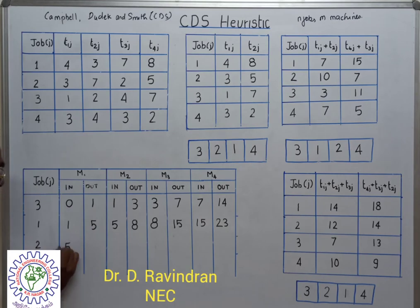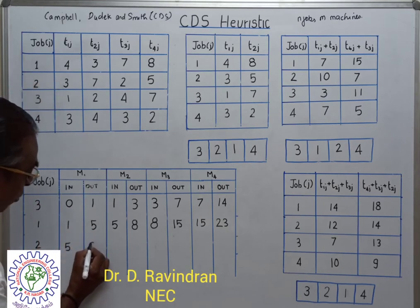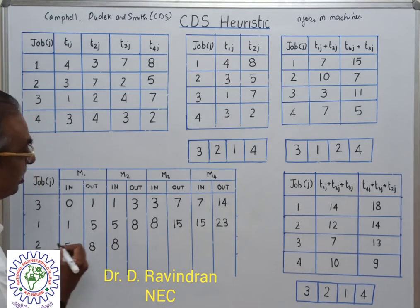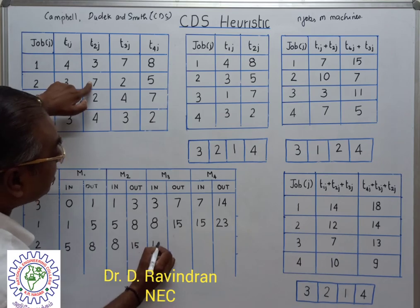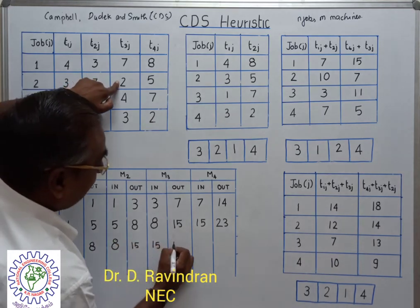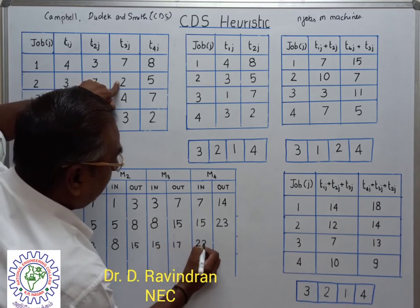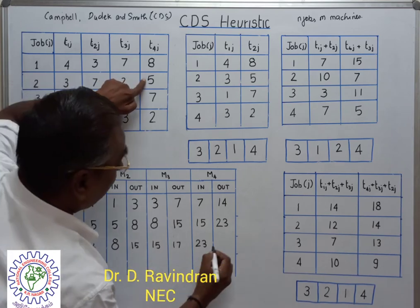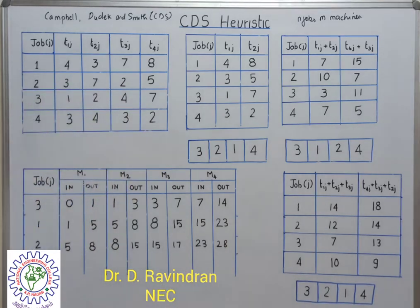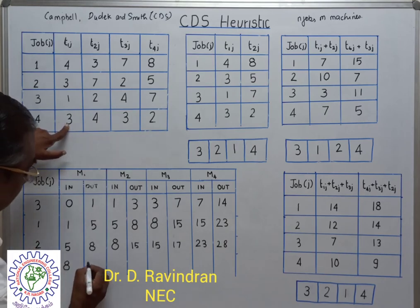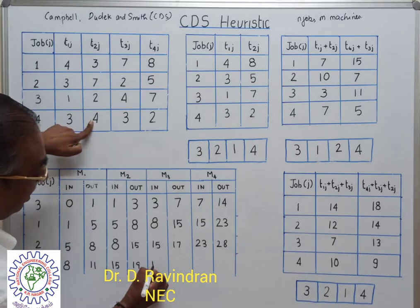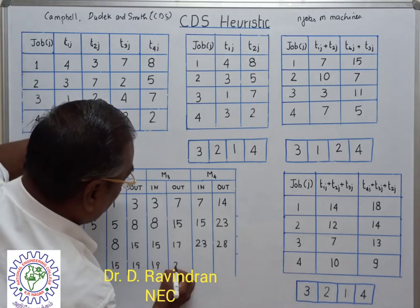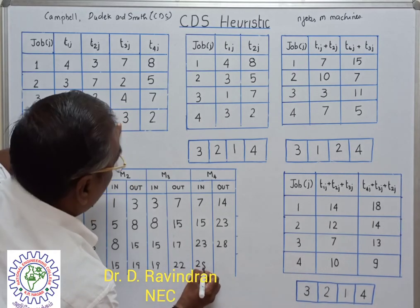Job 2 enters M1 at 5 hours, processed for 3 hours (exits at 8 hours), enters M2 at 8 hours, processed for 7 hours (exits at 15 hours), enters M3 at 15 hours, 15 plus 2 equals 17 hours. It enters M4 at 23 hours, processed for 5 hours, so 28 hours. Job 4 enters M1 at 8 hours; 8 plus 3 is 11 hours. It can enter M2 at 15 hours; 15 plus 3 is 22 hours, then M3 at 19 hours; 19 plus 3 is 22 hours. It enters M4 at 28 hours; 28 plus 2 equals 30 hours.